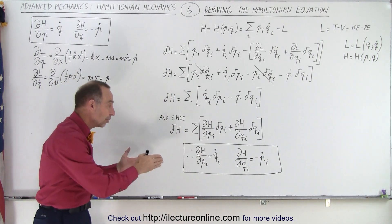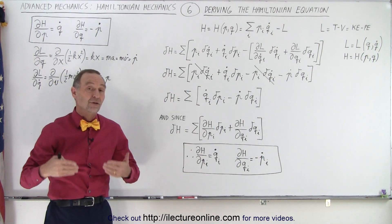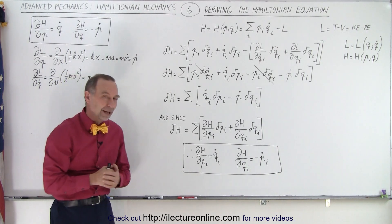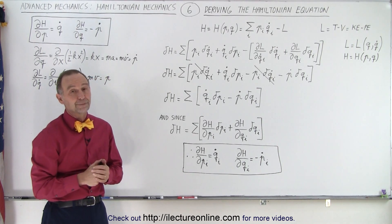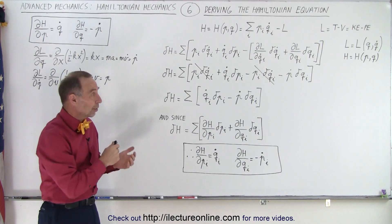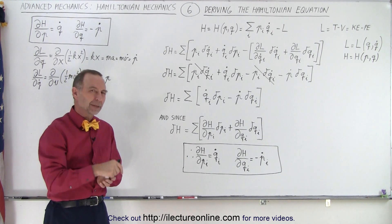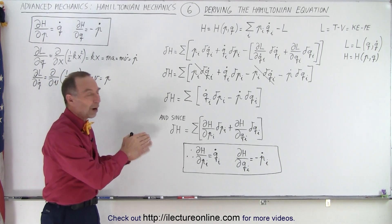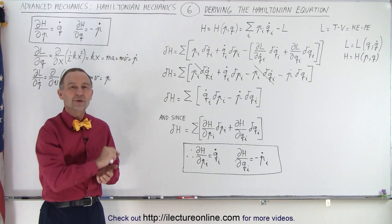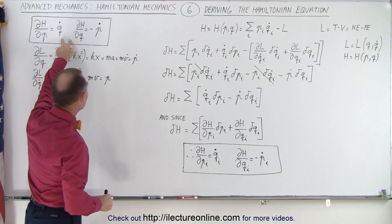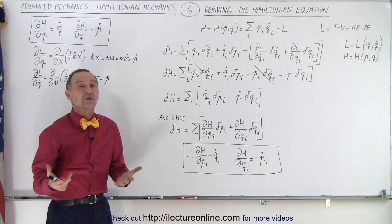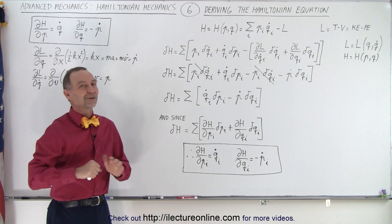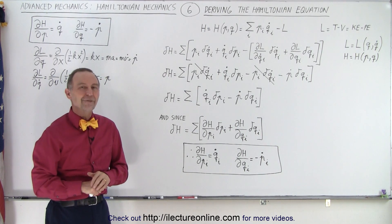That's why we can use those equations to come up with the equations of motion for whatever problem we're dealing with when using the Hamiltonian. We can go ahead and show more examples, which will come later. At least now we know why we can use the Hamiltonian the way we use it and where those two equations came from — although it's not as useful as the Lagrangian, as we'll see in the videos to come.